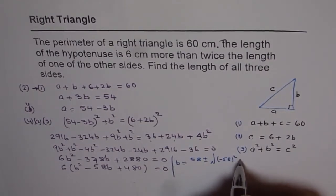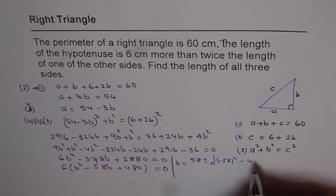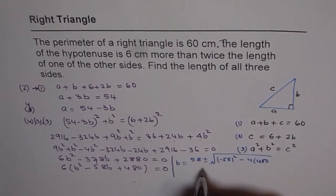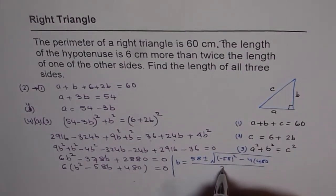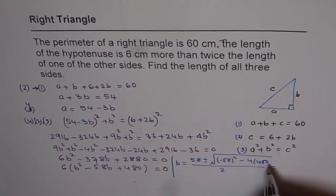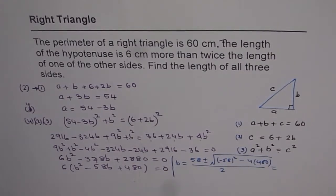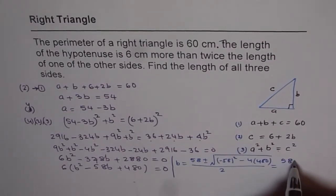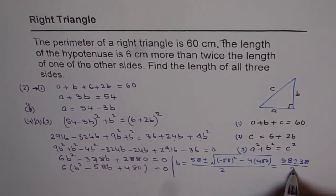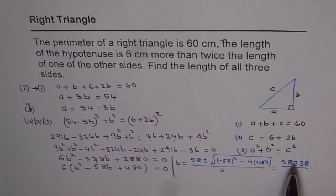58 square minus 4 times 480 equals 1444 and square root of 1444 is 38, so we have minus 58 plus minus 38 over 2 and that gives us 2 values.